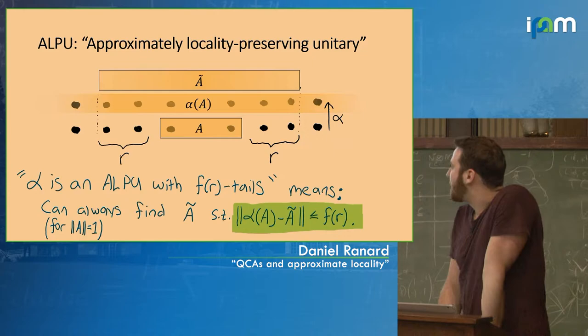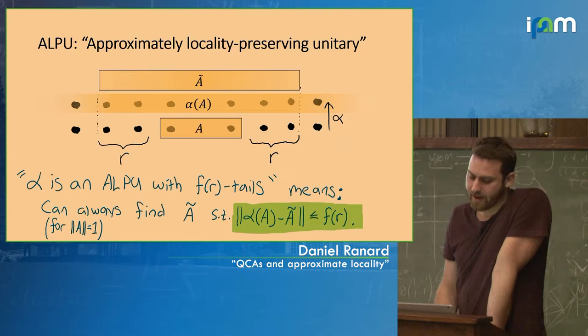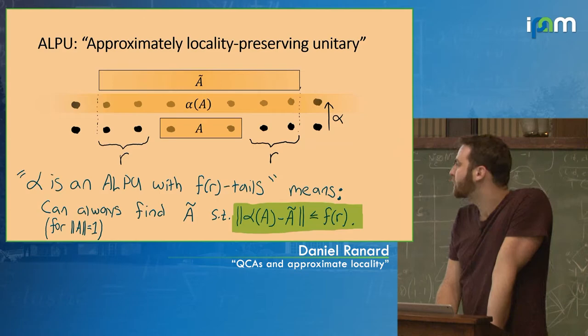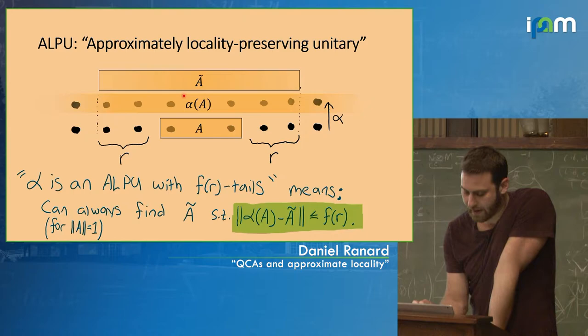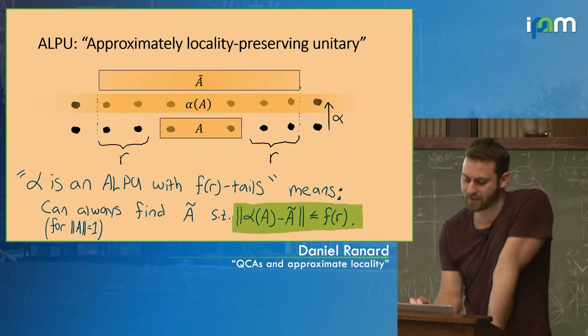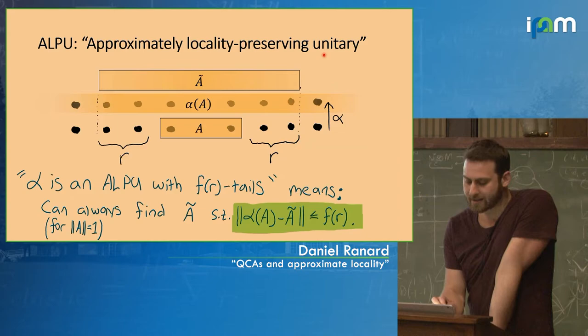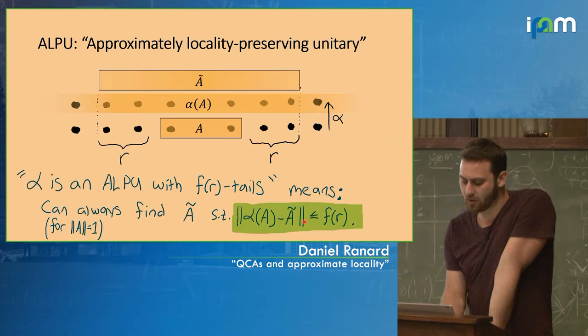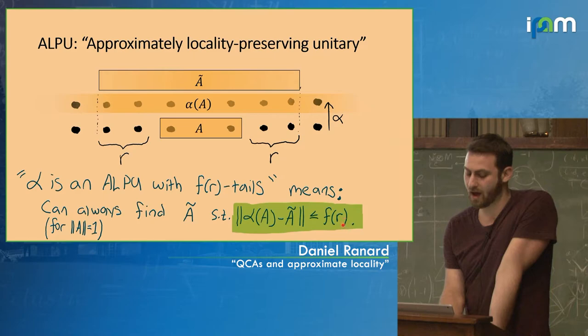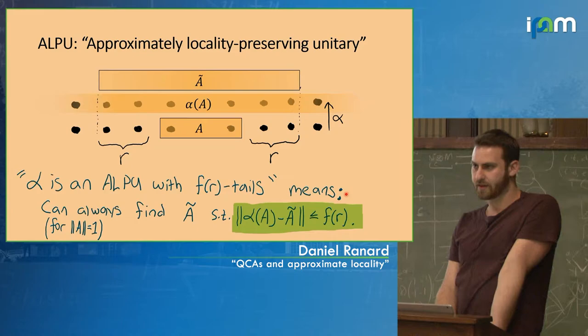Now I'll finally define an ALPU. Alpha is an ALPU with f(r) tails, where f(r) is some function that decays to zero quantifying these tails. The condition is that when I take A and look at alpha(A), which leaks everywhere on the spin chain, we ask how well we can approximate it when we restrict to a neighborhood of radius r around the original support. If we can always find some A-tilde that approximates alpha(A) to within f(r) in the operator norm, we call this an ALPU with f(r) tails.